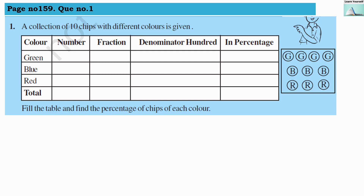Welcome to Learn Yourself, page number 159, question number one. A collection of 10 chips with different colors is given. We have to write how many green chips there are, represent it as a fraction, make the denominator 100, and then write it in percentage. Let us first write the number of each color chip and then see the total count.